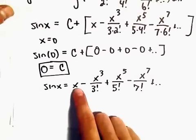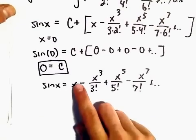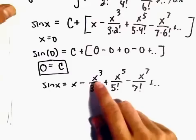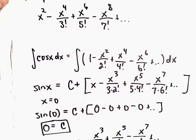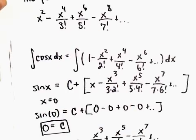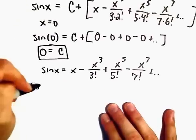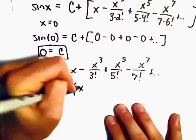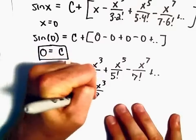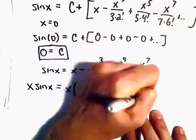So one thing we could try is integrate again, but then we're going to have like x squared over 2 and x to the 4th over 4 factorial, and the factorials are kind of messed up. So I think the easiest way just to increase the exponents by 1, we can simply multiply both sides by x. And I think if we do that, that's going to give us exactly what we needed.